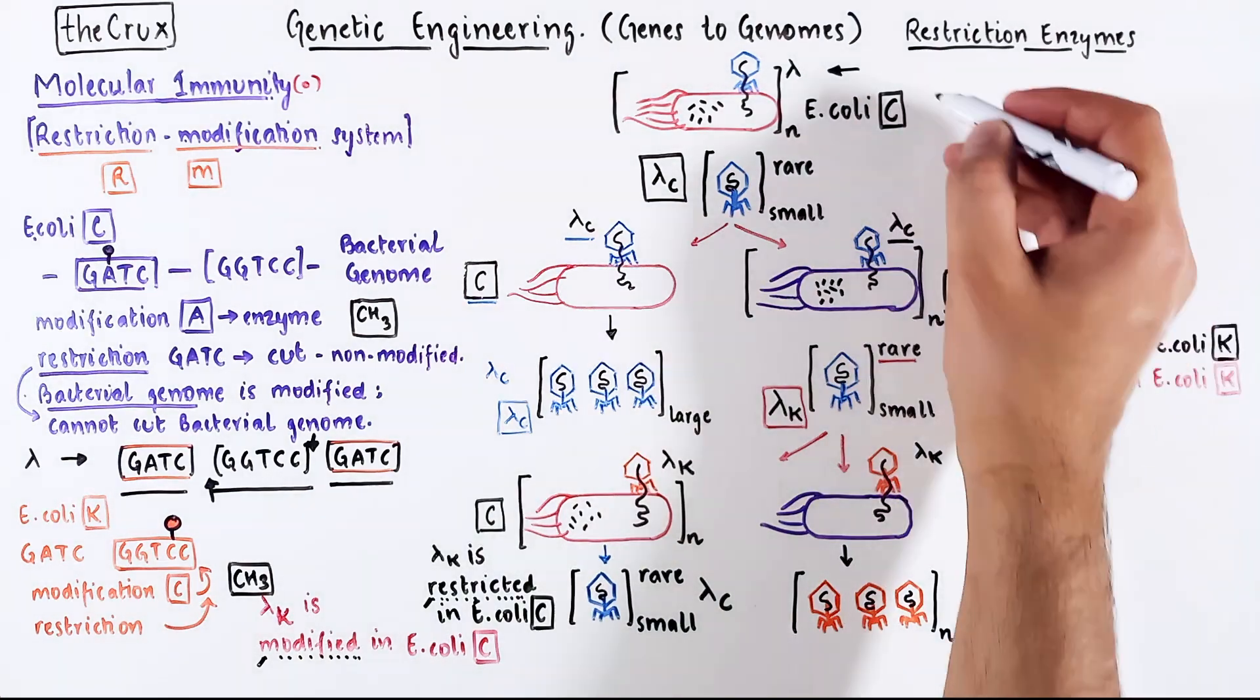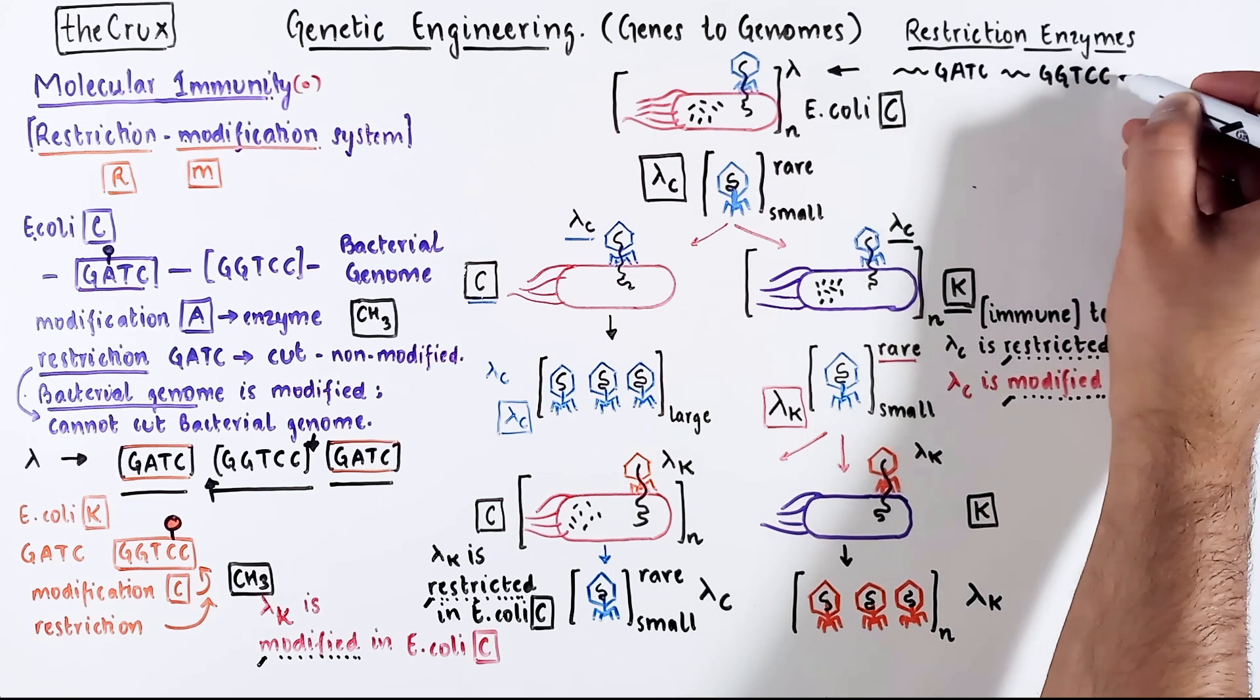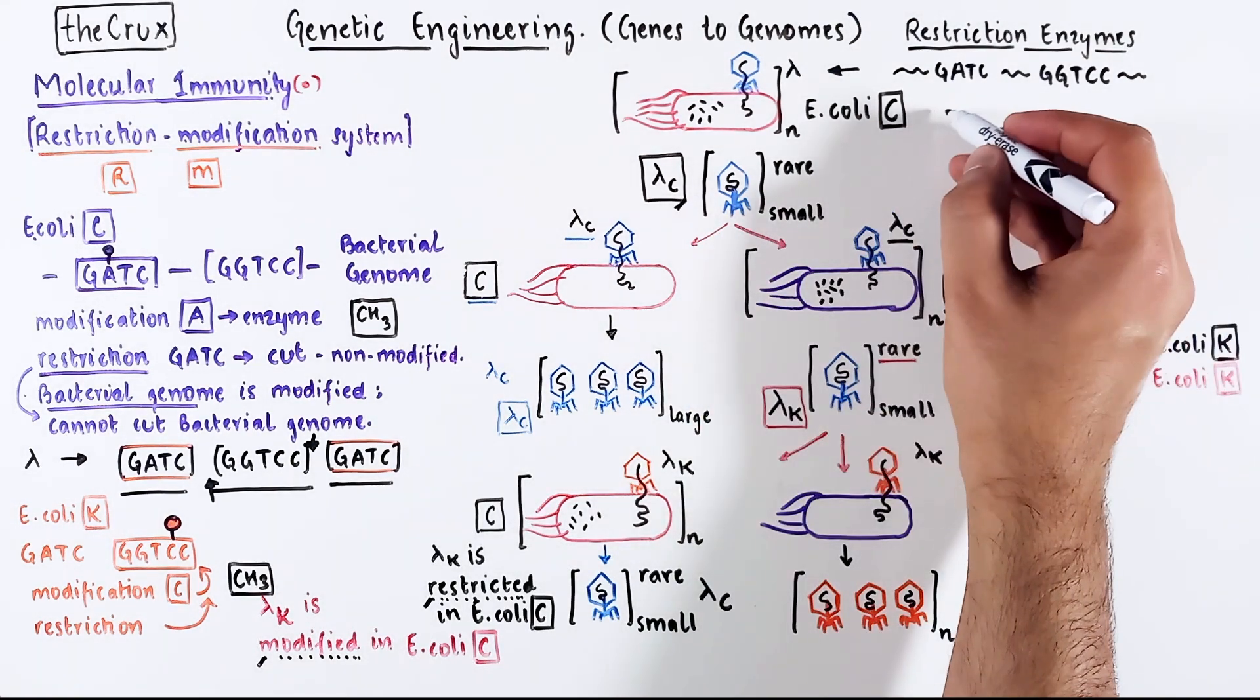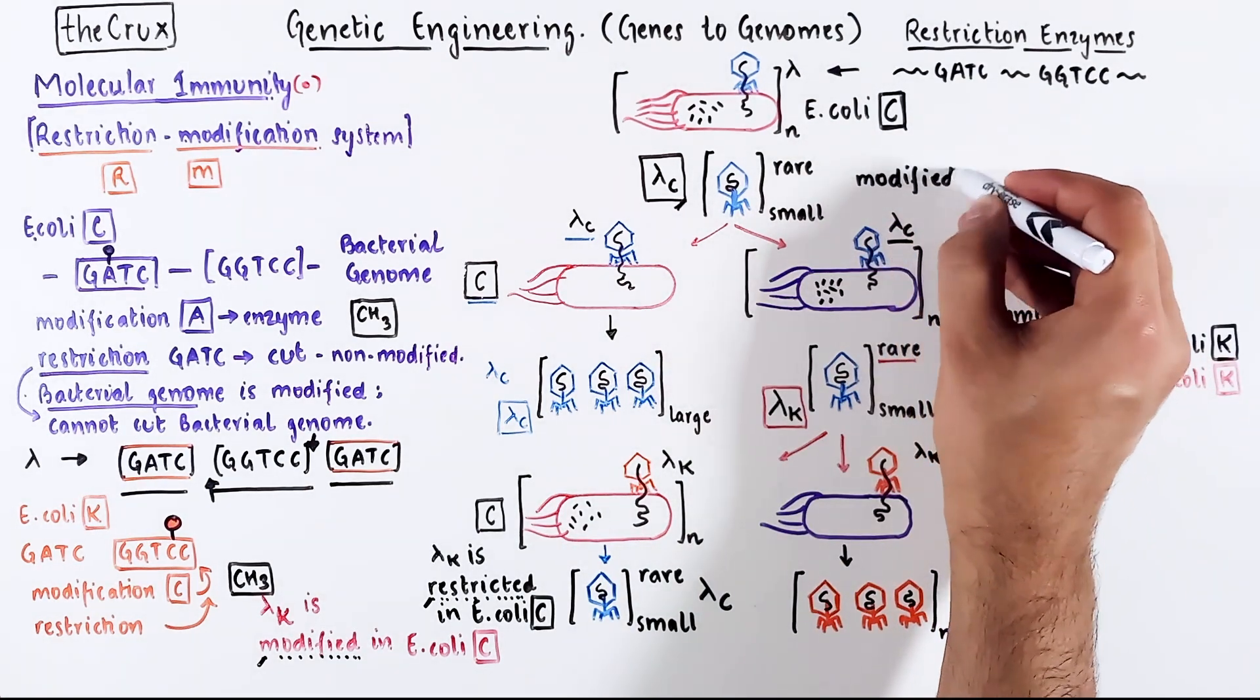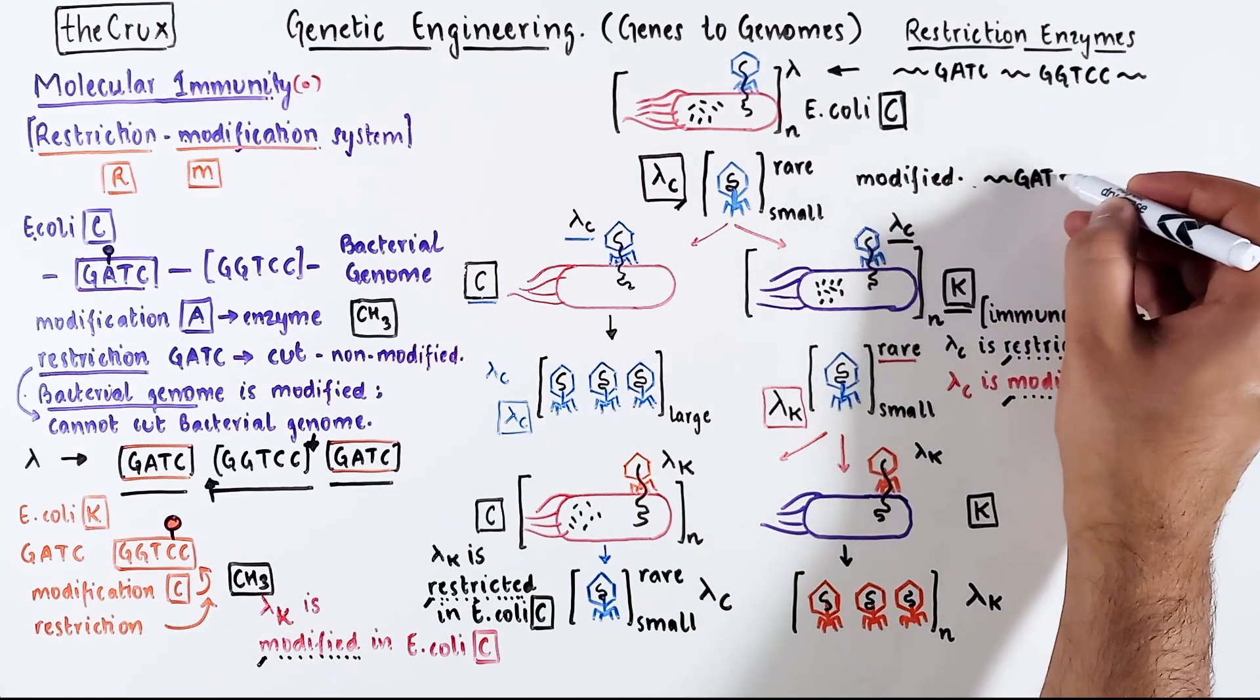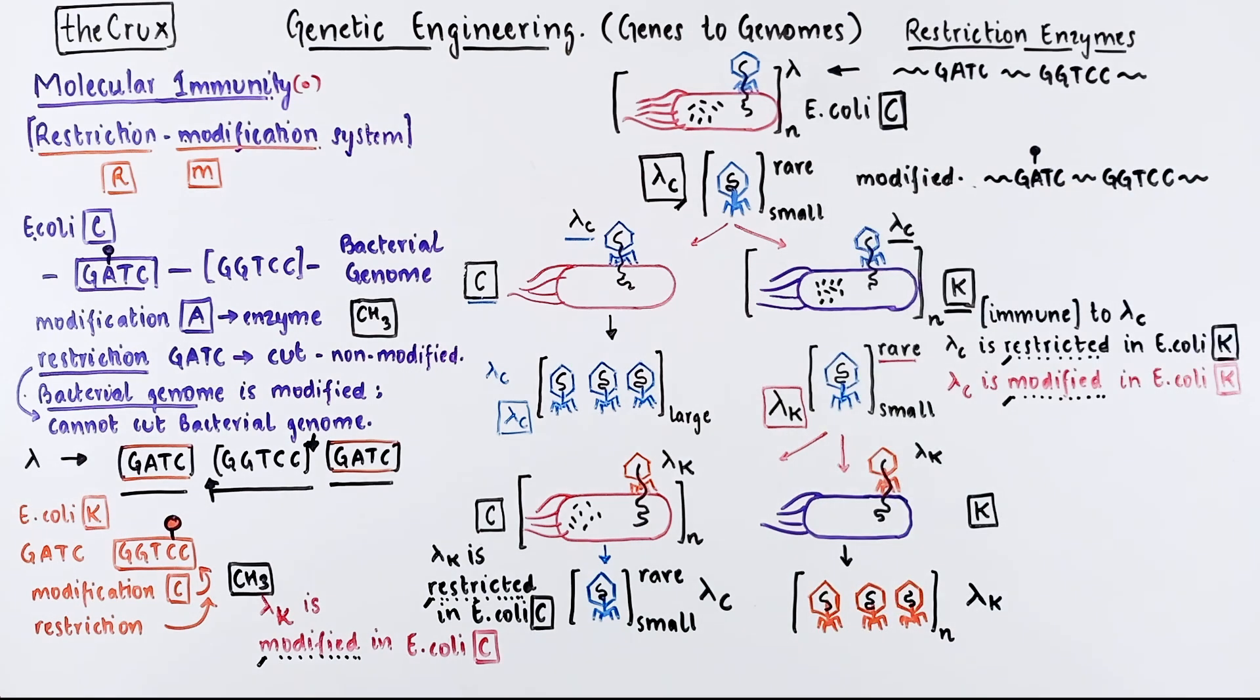Now we can revisit our schematic of this viral infection and you will see how all of this begins to make sense. Assume that the incoming lambda phage has a DNA which somewhere contains GATC and GGTCC. Once it passes the E. coli C to make lambda C, the DNA is modified by the modifying enzymes of C bacteria. So the genome of lambda C has modified GATC. The modification is at GATC because we are following the rules that we laid out before.